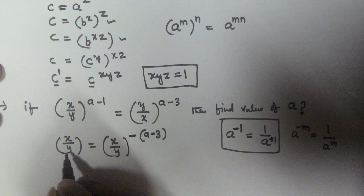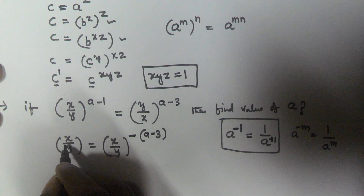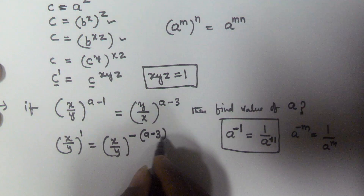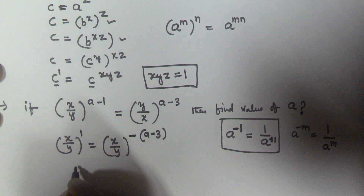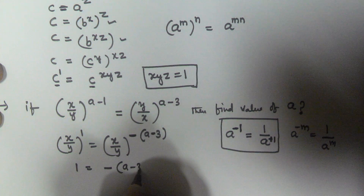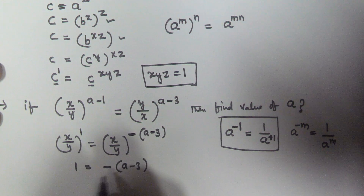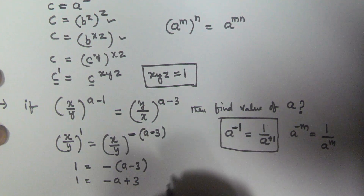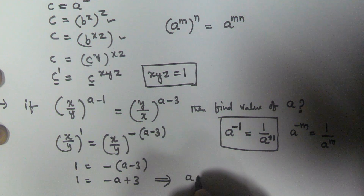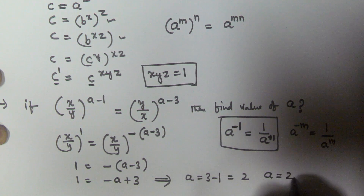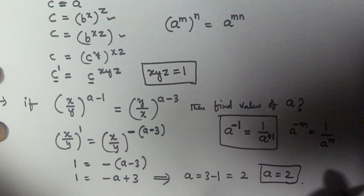On both sides, the base is the same: x/y. So we have x/y to the power of (a minus 1) equals x/y to the power of minus(a minus 3). Since the bases are the same, the exponents must be equal: a minus 1 equals minus a plus 3. Rearranging, a plus a equals 3 plus 1, giving 2a equals 4, so the value of a is 2.